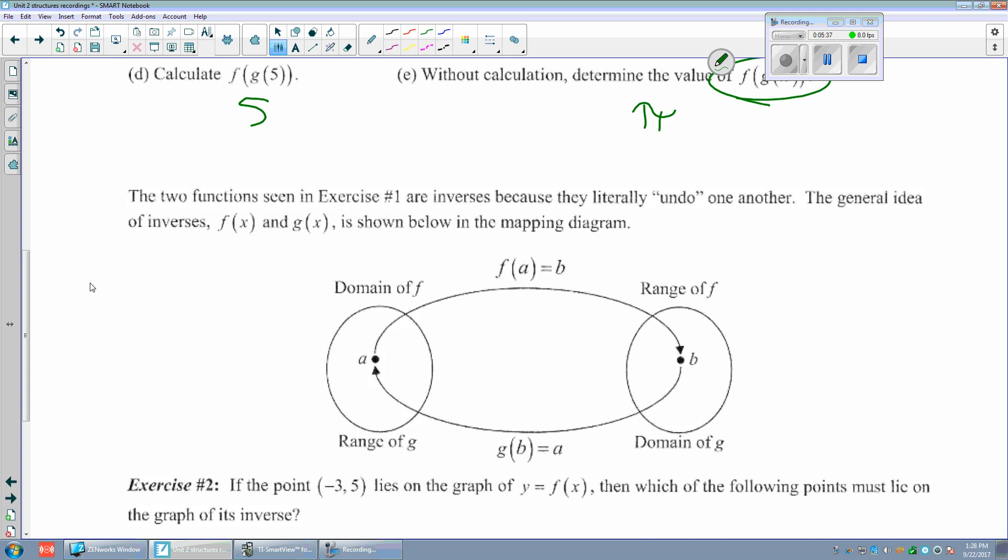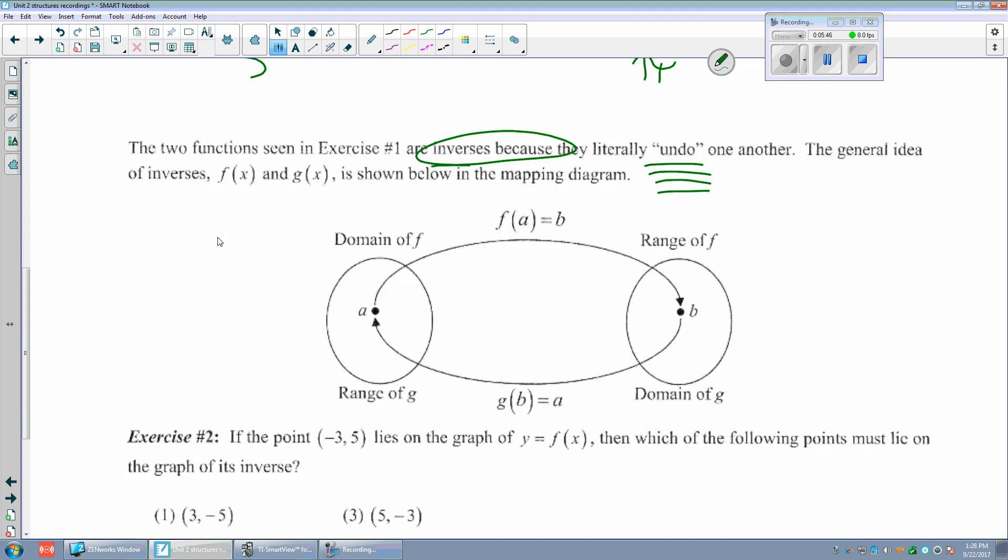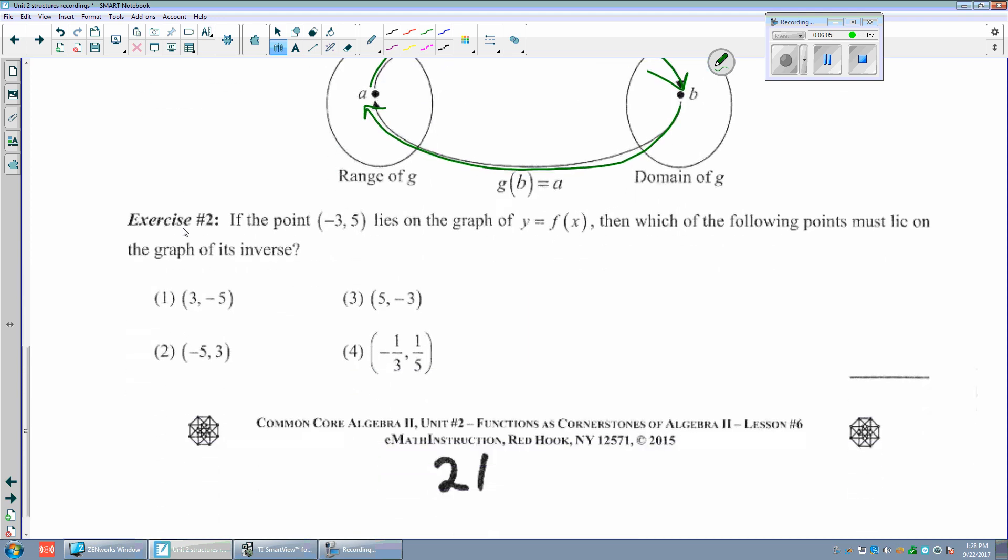The two functions in Exercise 1 are inverses because they literally undo one another. The general idea of inverses f(x) and g(x) is shown below. In other words, I'm in Mr. Bryce's room, I go over to Mrs. Buckley's room in Earth Science, and then I go from Mrs. Buckley's room back to Mr. Bryce's room - it undoes itself. Exercise 2: If the point (-3, 5) lies on the graph y = f(x), then which point must lie on its inverse? If -3 goes to 5, then 5 has to go to -3. The inverse is (5, -3).